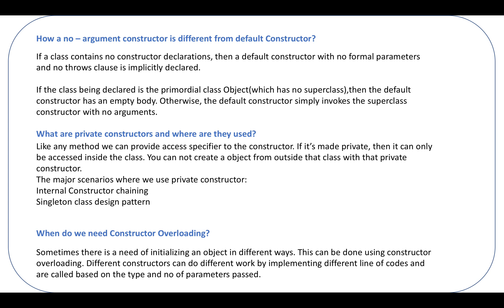When do we need constructor overloading? Sometimes there is a need to initialize an object in different ways, and this can be done using constructor overloading — you write different constructors with the same name but passing different parameters. Different constructors can have different implementations. For example, you might use a simple constructor when no initialization is needed, but use a parameterized constructor when you want to execute some piece of code and initialize non-static members at the time of object creation.